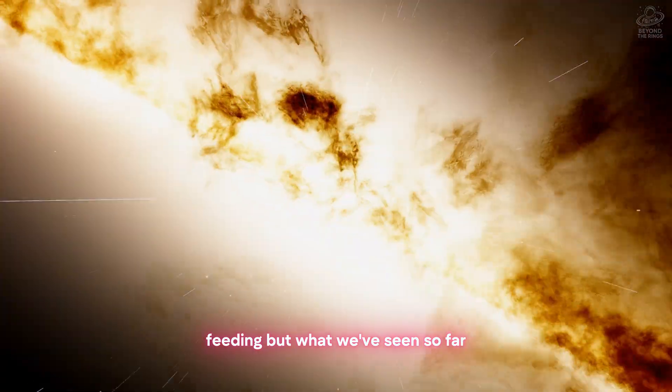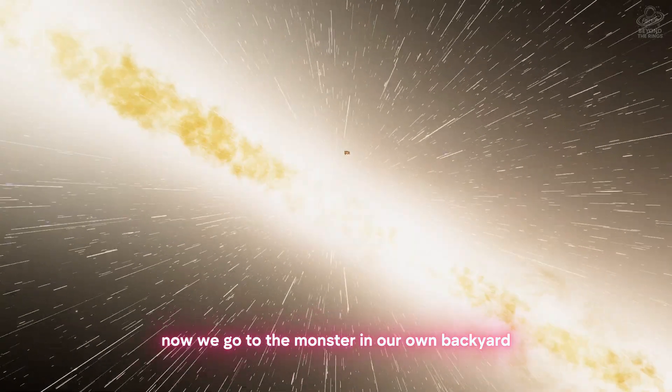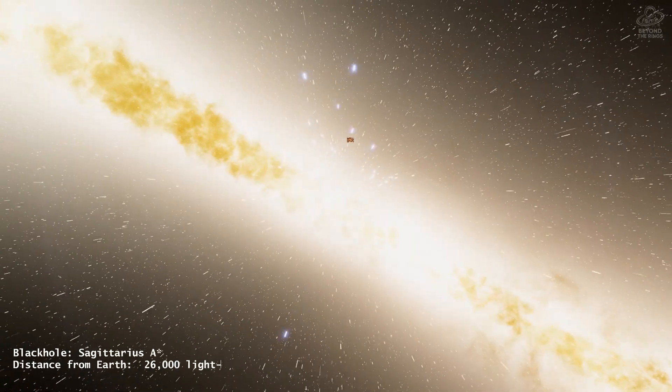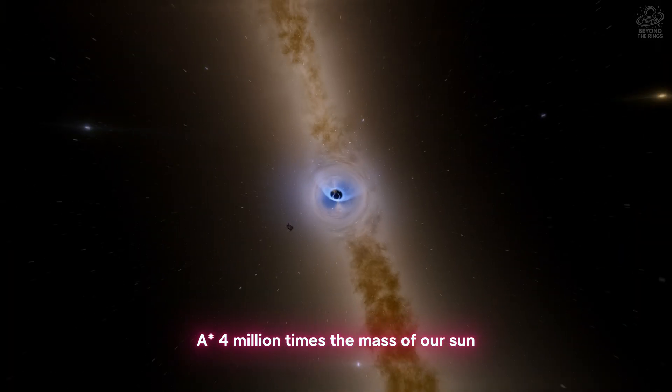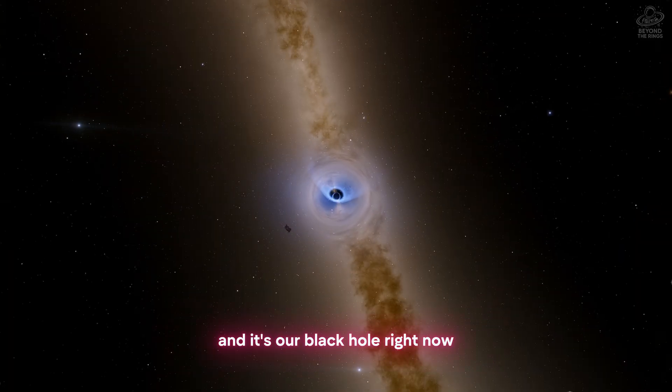But what we've seen so far? These are babies. Now we go to the monster in our own backyard. This is Sagittarius A star. Four million times the mass of our sun. And it's our black hole.